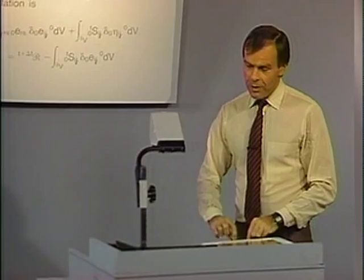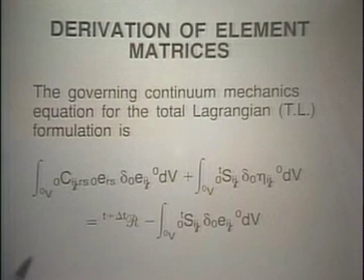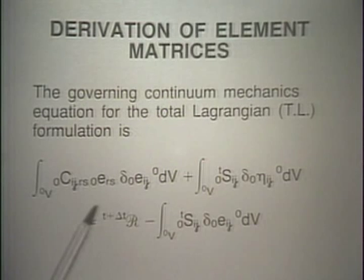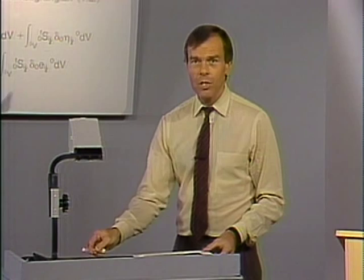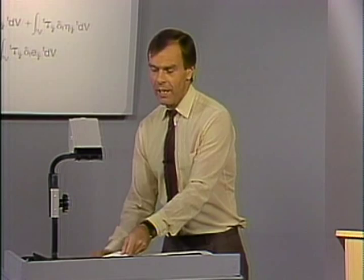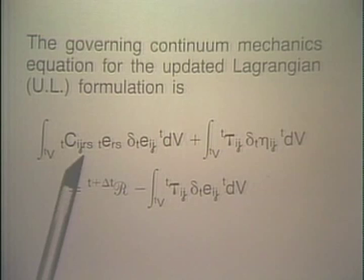The derivation of the finite element matrices is based on the continuum mechanics equations developed earlier. We have seen this equation for the total Lagrangian (TL) formulation — we discussed the terms, their meaning, and how they were obtained by a linearization process. The governing continuum mechanics equation for the updated Lagrangian formulation is also shown here; again, each of these terms was discussed, and we arrived at this equation by a linearization process.